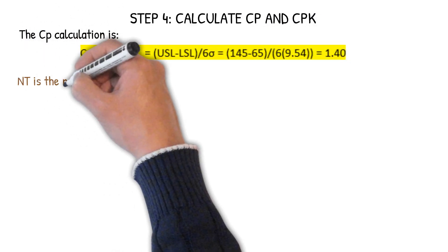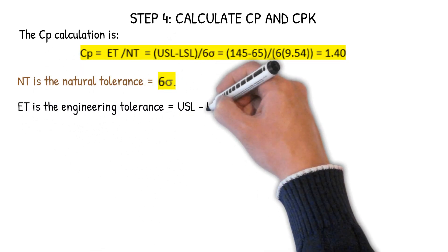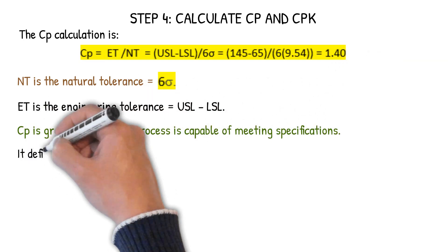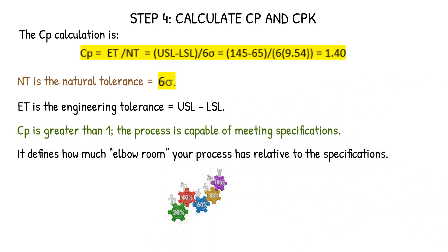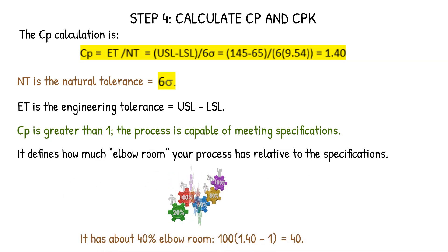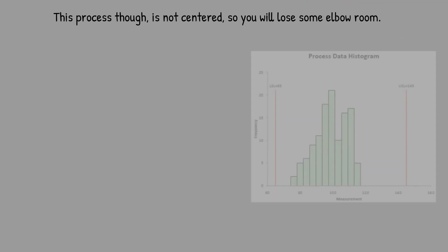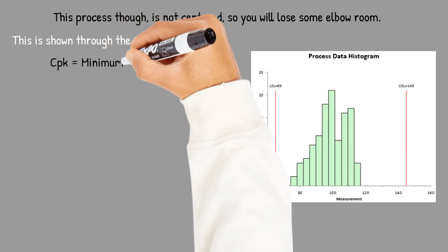We're going to calculate CP and CPK. CP calculation is the engineering tolerance divided by the natural tolerance. The natural tolerance is six times sigma. The engineering tolerance is the upper spec minus the lower spec. If it's greater than one, the process is capable of meeting specifications. It also defines how much elbow room your process has relative to the specifications. In this case, it's about 40% because you have a CP of 1.40. But the process is not centered, so you're going to lose some elbow room.